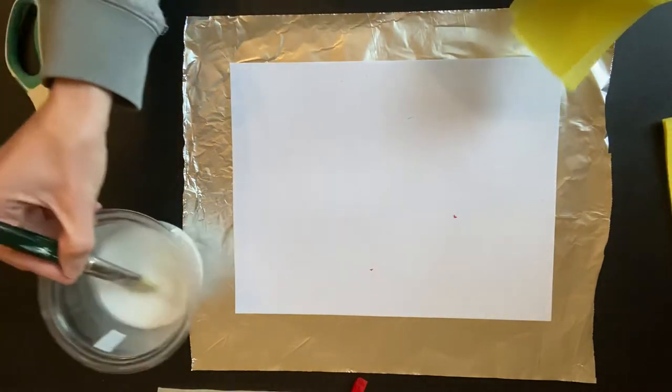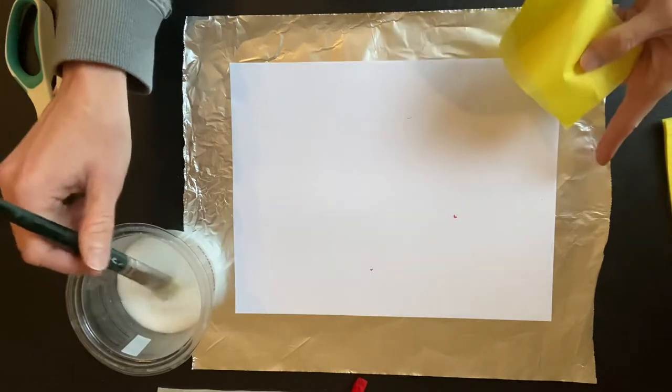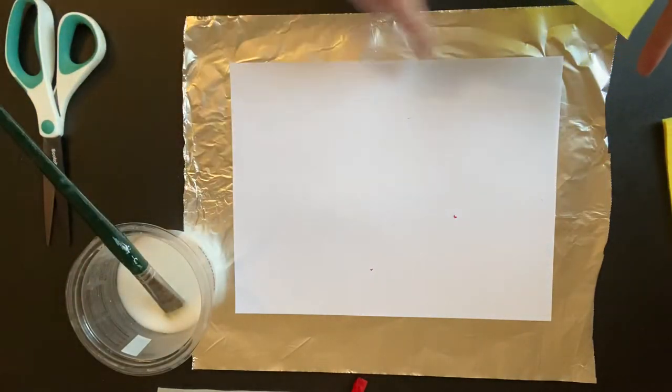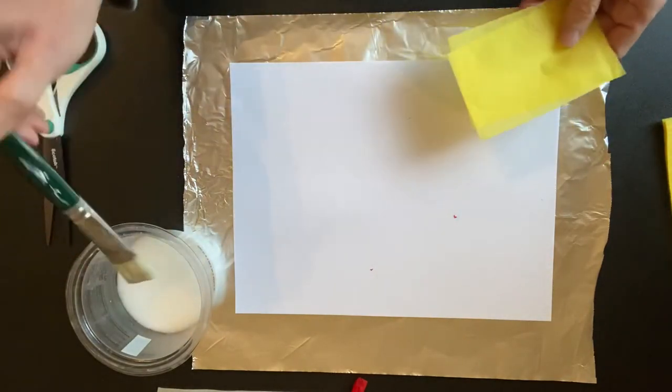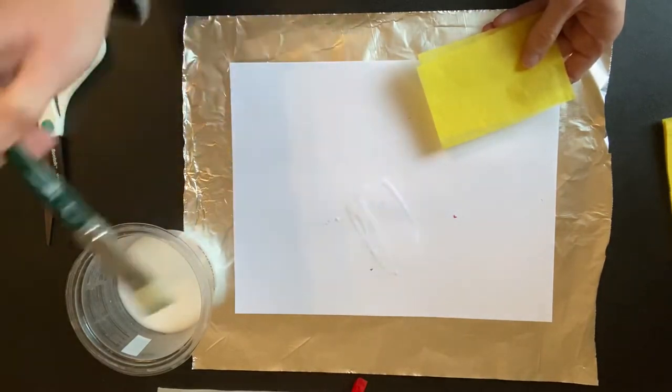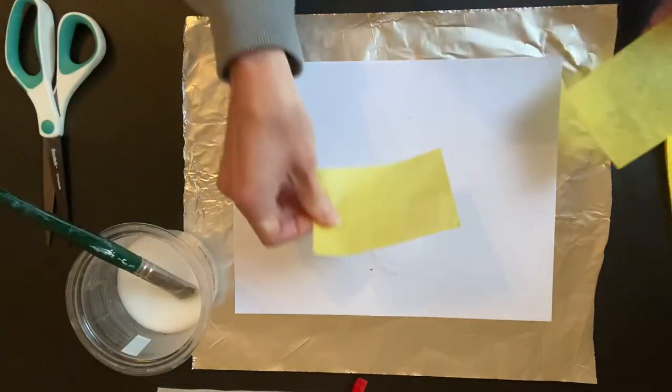So what I'm going to do is take the glue water and I put tinfoil behind my paper just to kind of protect the table. I'm going to take glue water and just put a little bit down on the paper first to get the first one stuck.